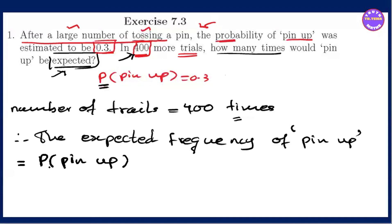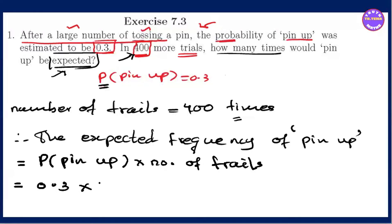What is the number of trials? The numbers: the number of trials is 400. So there should be a pin-up probability mark of 0.3 for 400 trials. We have to do the calculation — the expected frequency is 0.3 multiplied by 400. We're going to use the next step to complete this.